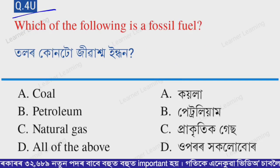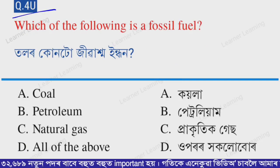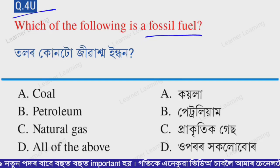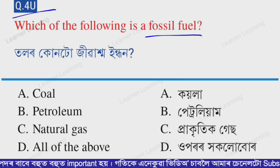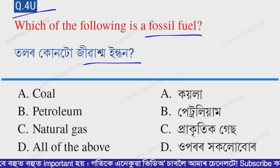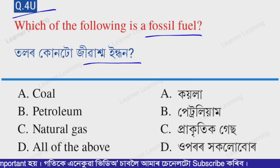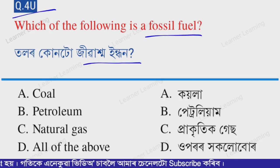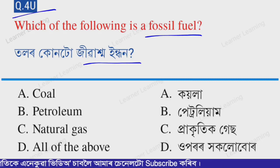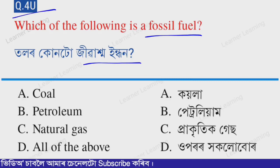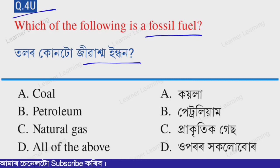Next question for you to answer in the comment box: Which of the following is a fossil fuel? Option A — coal, option B — petroleum, option C — natural gas, option D — all of the above. Write your correct answer in the comment box.